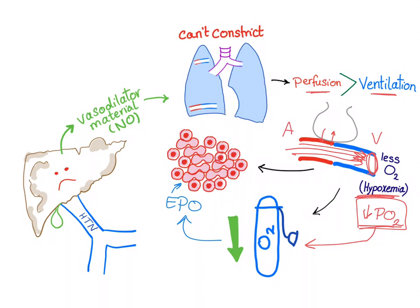Now we have a symptom called platypnea, which will be discussed later in a different video. But for now, you got the idea behind hepatopulmonary syndrome — I cannot constrict the blood vessels in the lung as I normally do, so there is arterial venous shunting, hypoxemia, and hypoxia. It's a good idea to measure oxygen saturation by pulse oximeter.